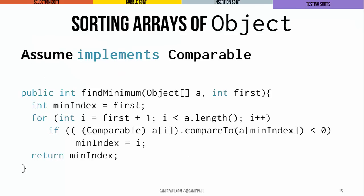We can use any of those three sort methods with an array of objects with a little modification. If we assume the objects implement the Comparable interface, they'll support the method compare to. All we have to do is replace the element type of all array parameters with object, and then replace calls to equals equals, less than, or greater than with calls to compare to. You can see what that looks like in the find minimum method — we take an object instead of an int, cast it to Comparable so we can use compare to, and everything works the same.